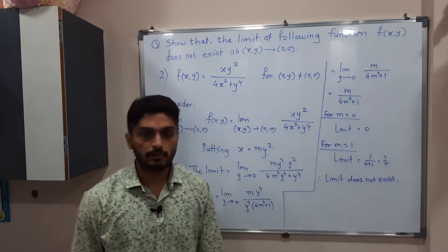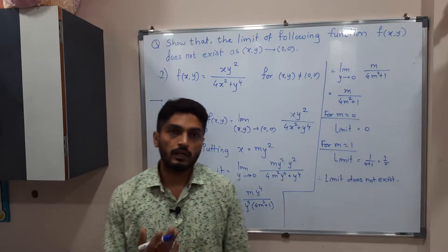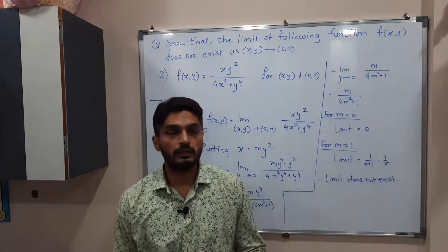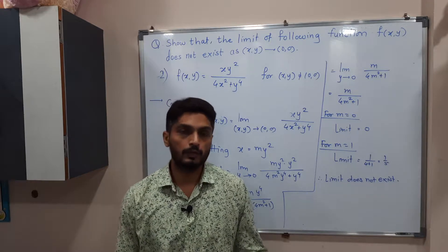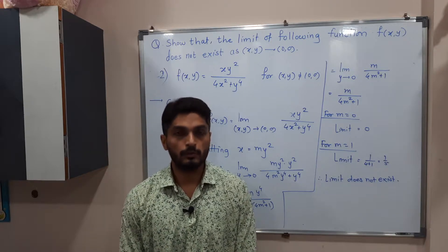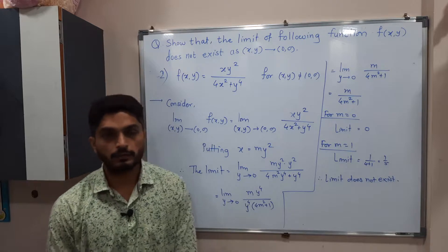The reason is the same: since for different values of m we are getting different limiting values, the limit does not exist. In this way we conclude both examples, and after that we stop.